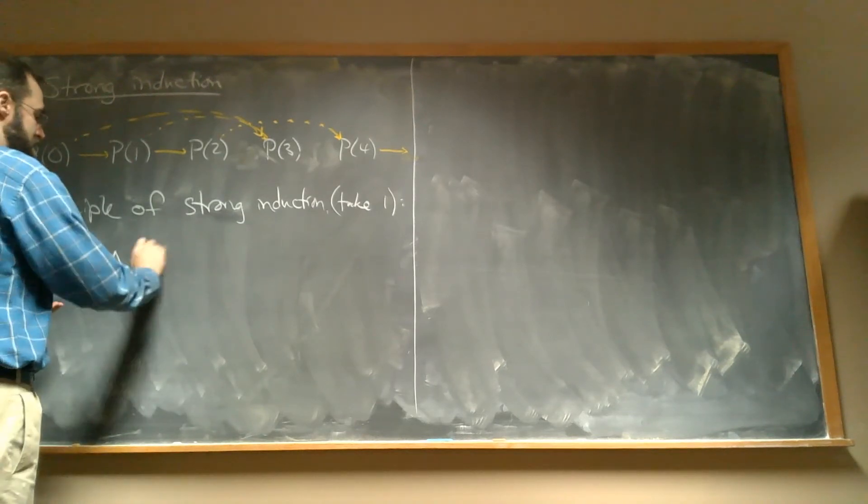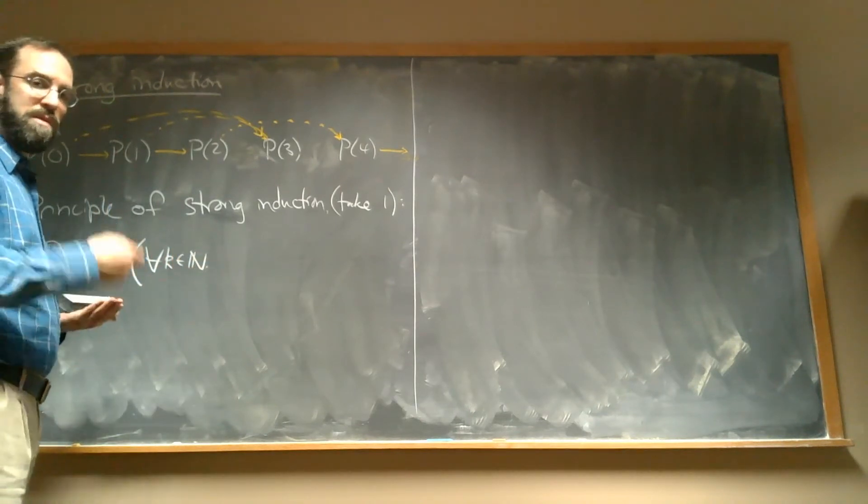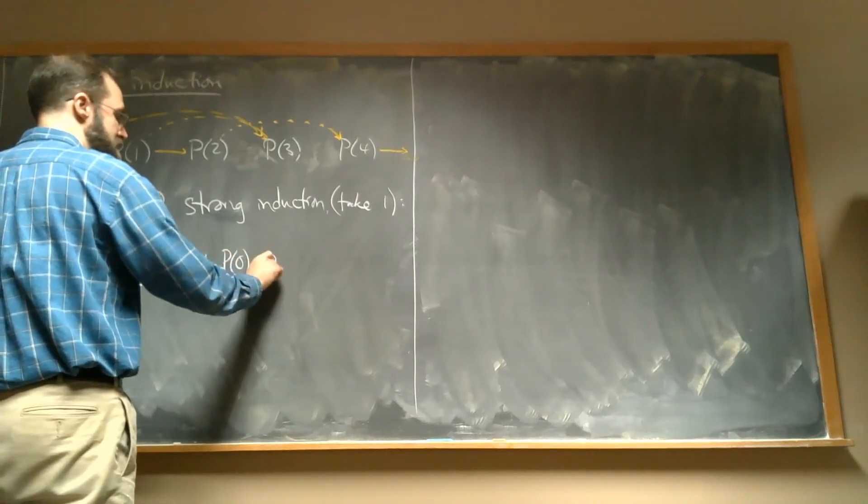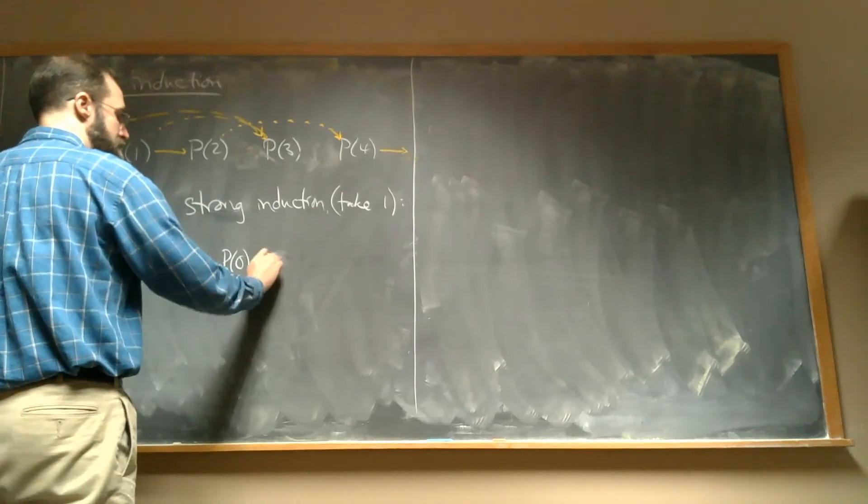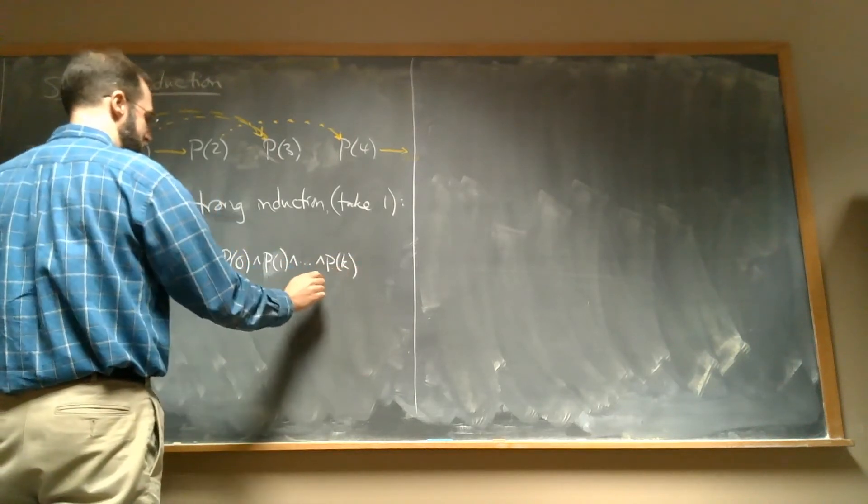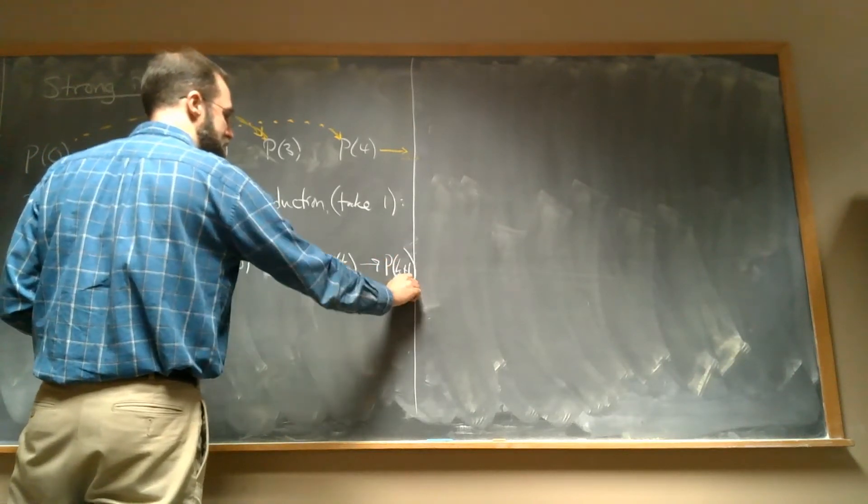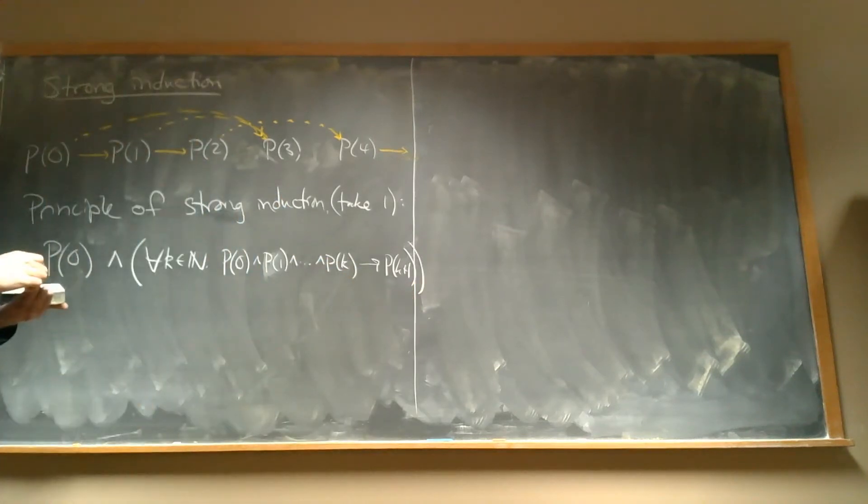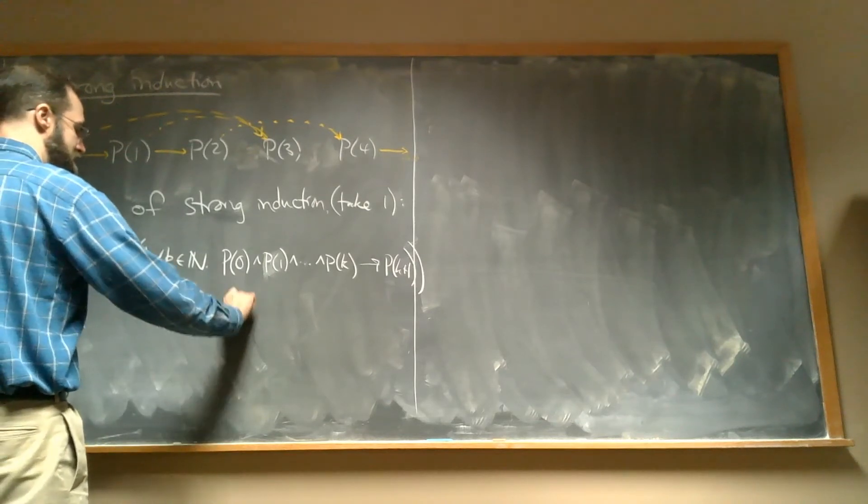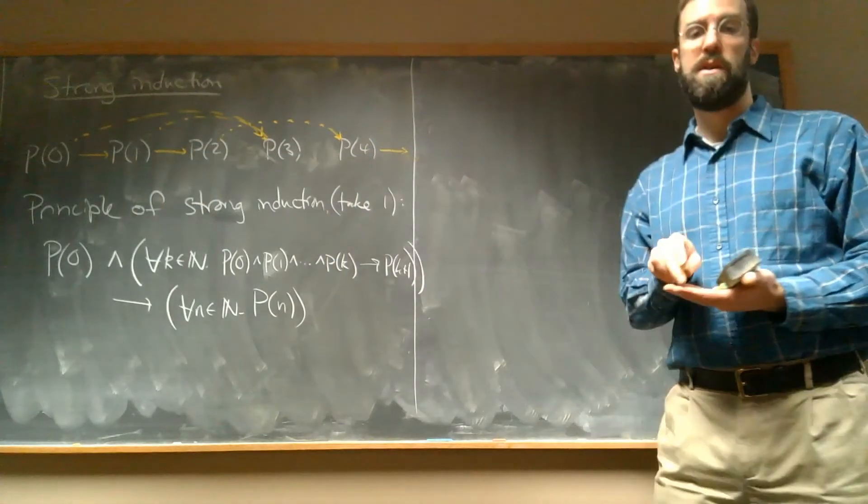And for all K and N, and here's where we would have said P(K) implies P(K+1). But we're going to say, if P(0) and P(1), and dot dot dot, P(K), if all those together imply P(K+1), then we get to conclude that the proposition P holds for all natural numbers N.